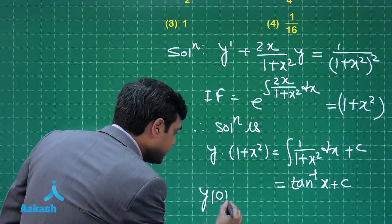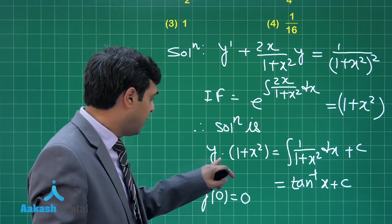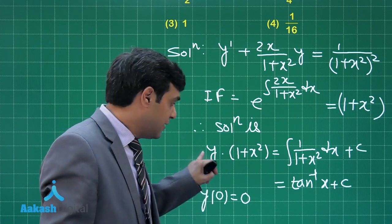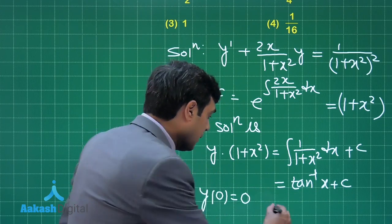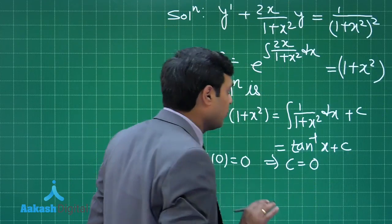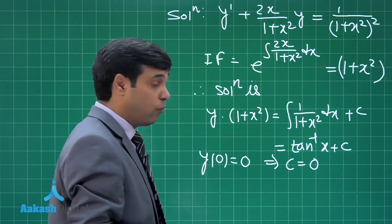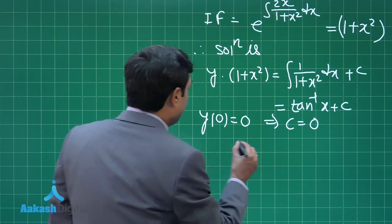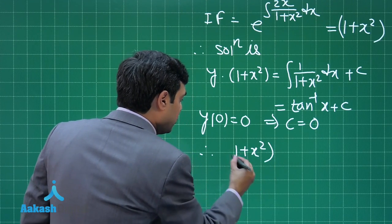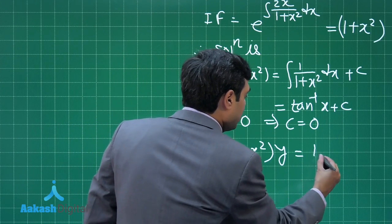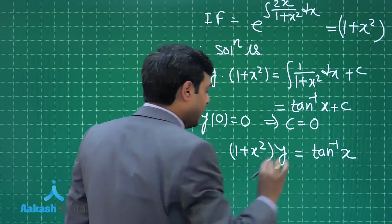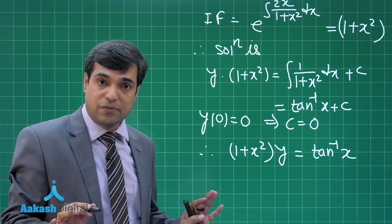Applying the initial condition y(0) = 0: putting x = 0, y = 0 gives 0 = 0 + C, so C = 0. Therefore the equation is (1 + x²) · y = tan⁻¹(x).